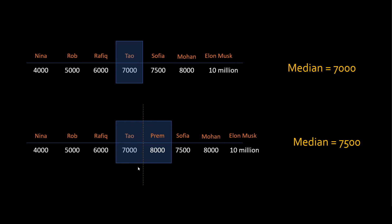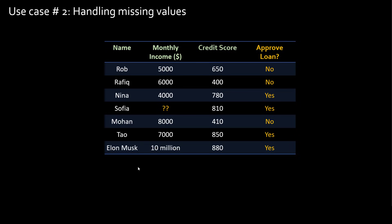So this is the first use case of using median in simple descriptive statistics. The other use case is handling missing values. Let's say you are building a machine learning model which can predict if a person's loan should be approved or not. Here, my features are credit score and monthly income, and some of my data points have missing values. In data science, we try to estimate the monthly income.